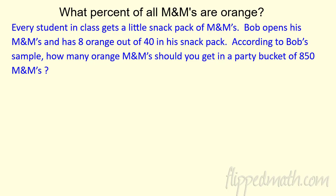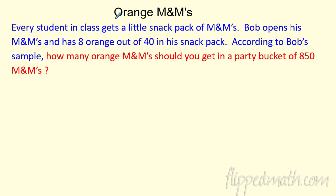Let's take a look at an example. I'm interested in the distribution of M&Ms — I love orange M&Ms. I want to know how they spread those out. Are there a lot of oranges, browns, reds, blues? So I buy everyone in class snack packs. I'm really interested in what percent of them are orange — how many orange M&Ms should I get in a big party bucket? It's massive. It's awesome.